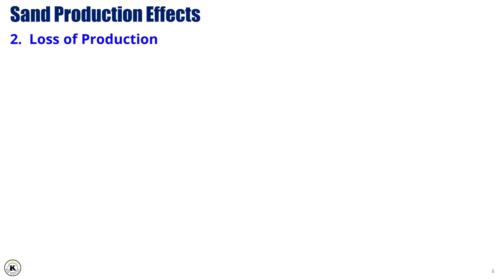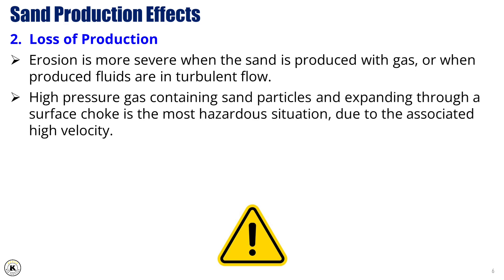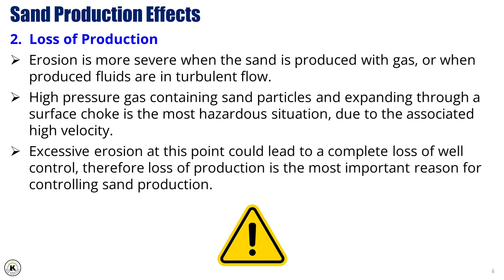Loss of production. Erosion is more severe when sand is produced with gas, or when produced fluids are in turbulent flow. High-pressure gas containing sand particles and expanding through a surface choke is the most hazardous situation. Due to the associated high velocity, excessive erosion at this point could lead to a complete loss of well control. Therefore, loss of production is the most important reason for controlling sand production.